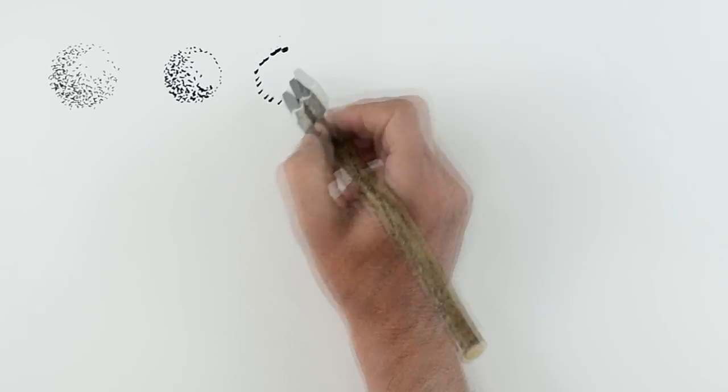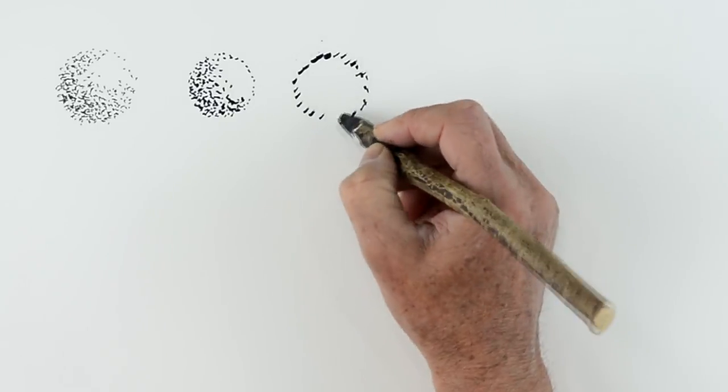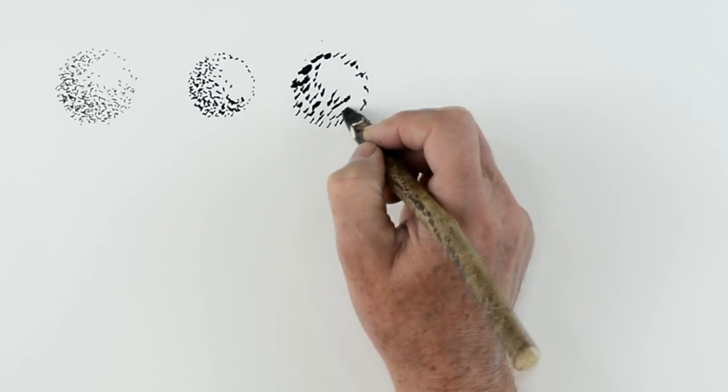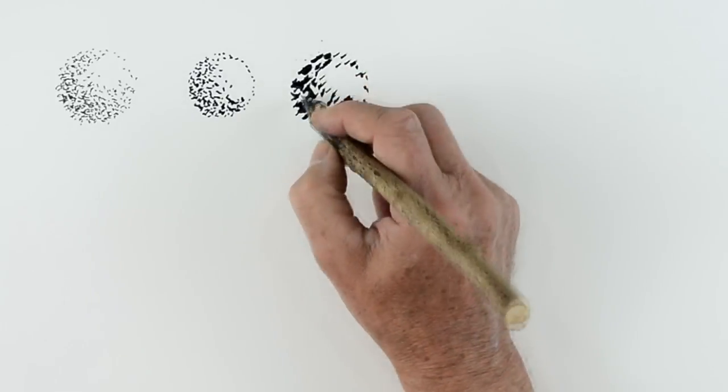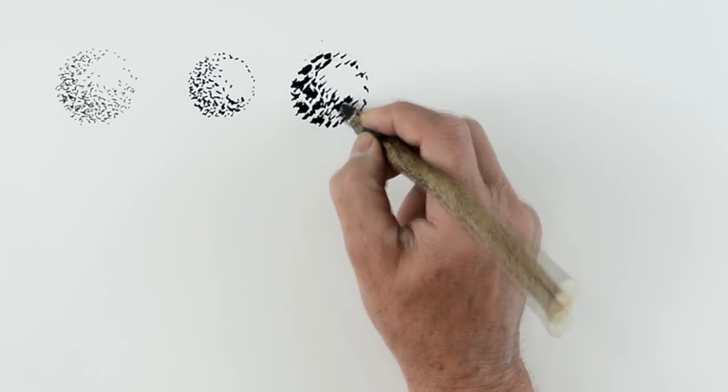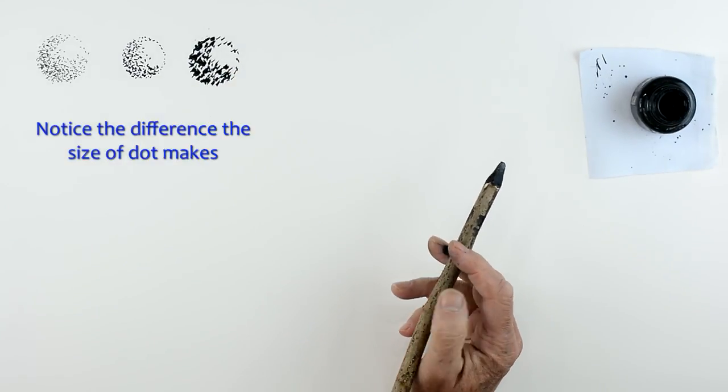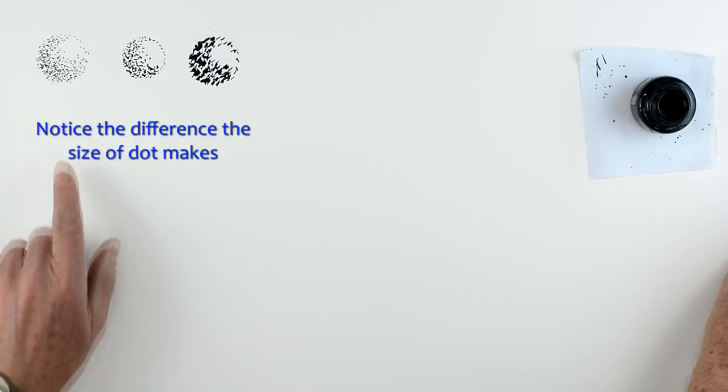The stick, well, the stick produces nice big thick bold marks. And the more you dip with the stick, and that's difficult to say, then the darker tone will be. And you can see you can create some really dark tones by using the stick.